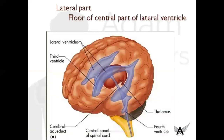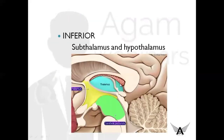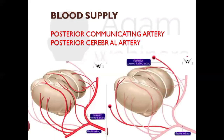The lateral part of the dorsal surface forms the floor of the central part of the lateral ventricle. The lateral ventricle on either side has its floor formed by the superior surface of the thalamus. Moving on to the inferior surface or ventral surface: it is related to the subthalamus and the hypothalamus. That's all about its relations.